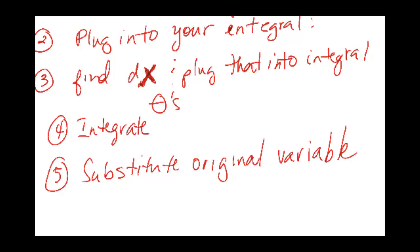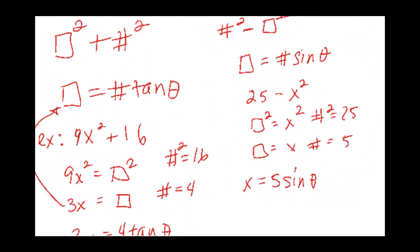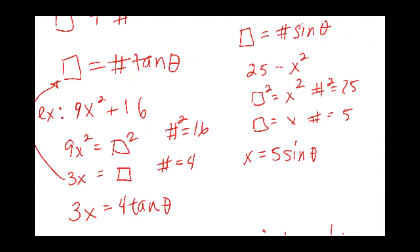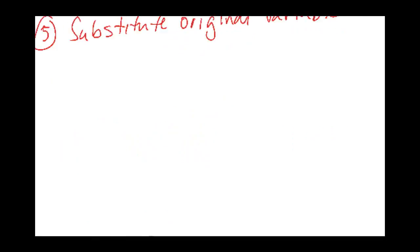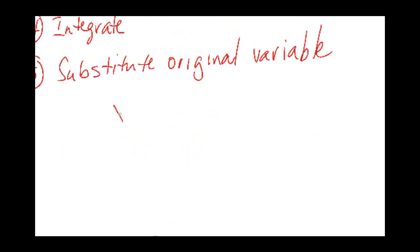How do you set up your triangle? Well, let's take this expression up here where I had x equals 5 sine theta. So if x equals 5 sine theta, I can set up a triangle that has a sine of x over 5, meaning that's your opposite and that's your hypotenuse.